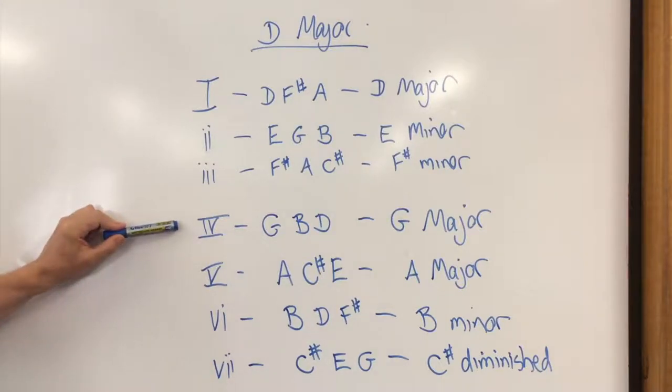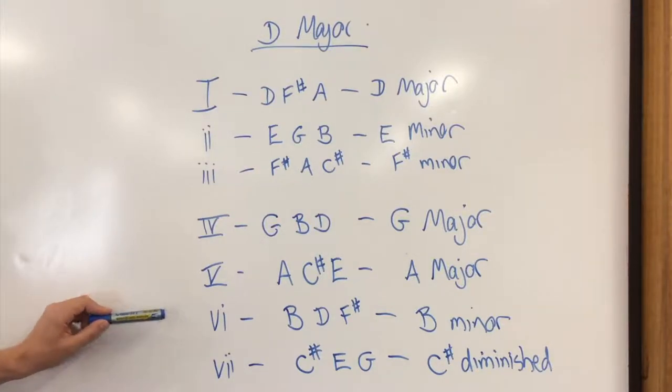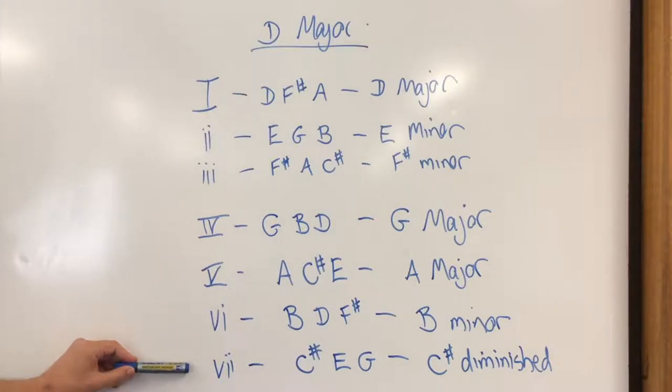Moving on to chord four, it's a strong G major chord. Chord five, the dominant chord, is A major. Chord six is a minor chord on B. And finally chord seven. Chord seven of D major is a C sharp diminished chord. We will avoid using this chord today, but we'll certainly use it in the future when we make our chord progressions a little bit more complex.